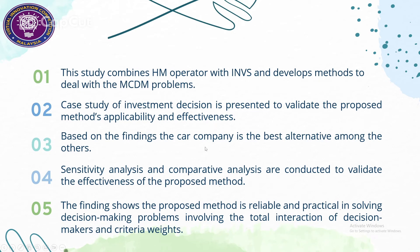As a conclusion, the study combined the Heronian operator with the interval neutrosophic big set and developed a method to deal with the MCDM problem. A case study of investment decision making is presented to validate the proposed method's applicability and effectiveness. Based on the findings, alternative four is the best alternative among the others. Sensitivity analysis and comparative analysis are conducted to validate the effectiveness of the proposed method. The findings show the proposed method is reliable and practical in solving decision making problems involving the total interaction of decision makers and criteria weights.